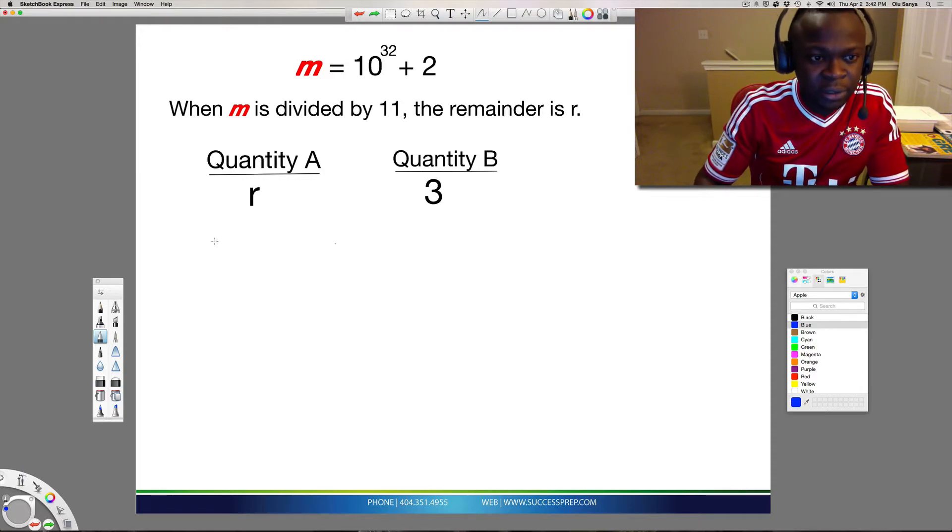So let's jump right into the question. The question is asking for M, and it says that is equal to 10 to the 32 plus 2, and it's telling us to divide that by 11.